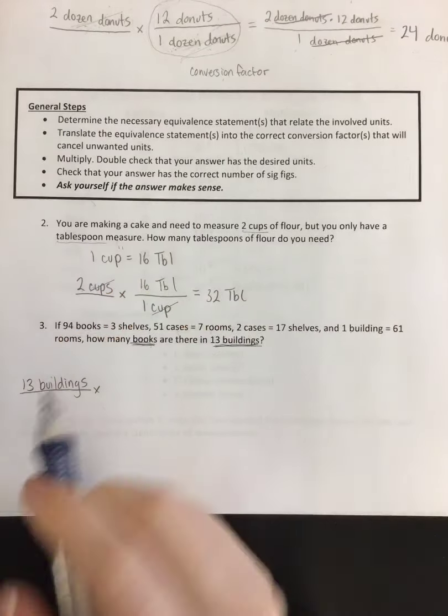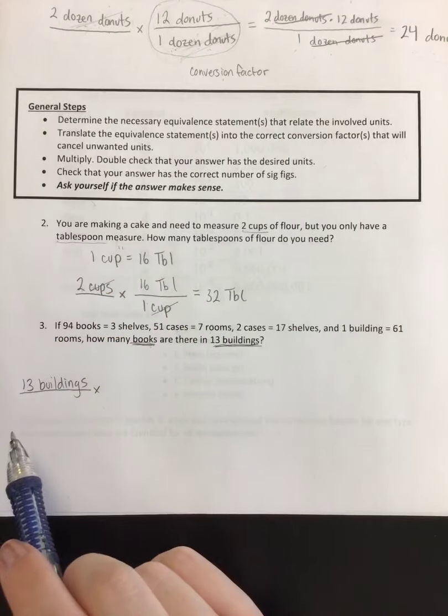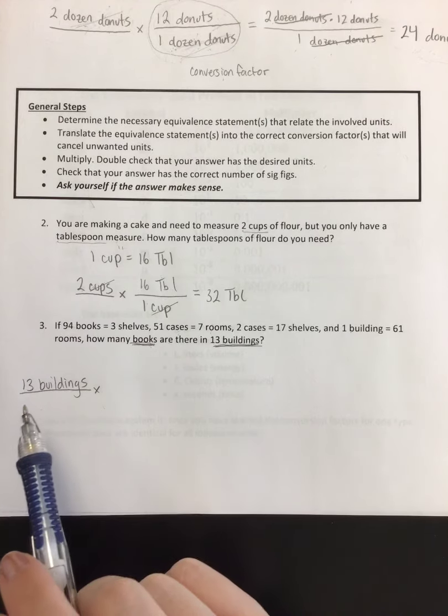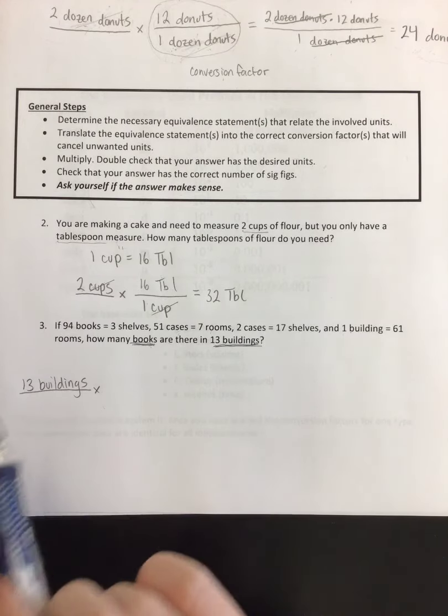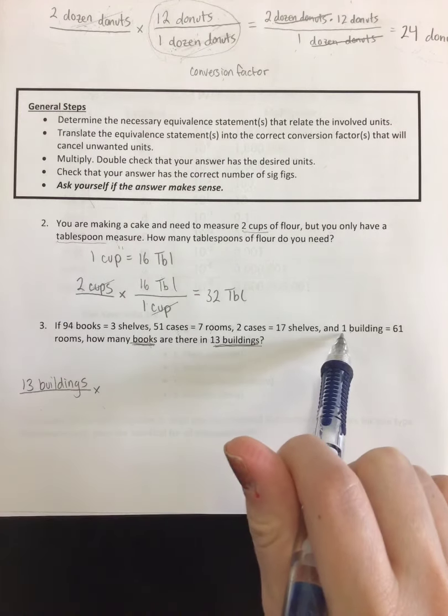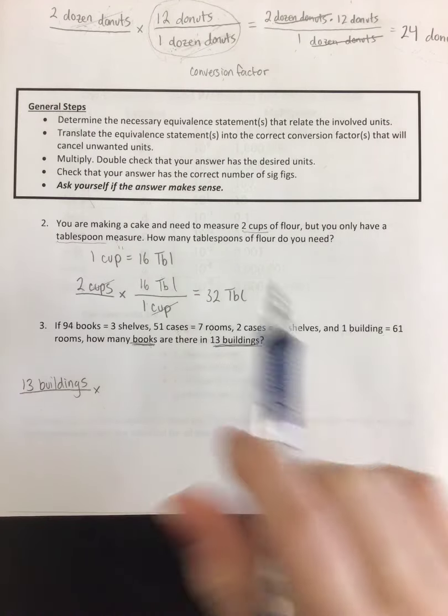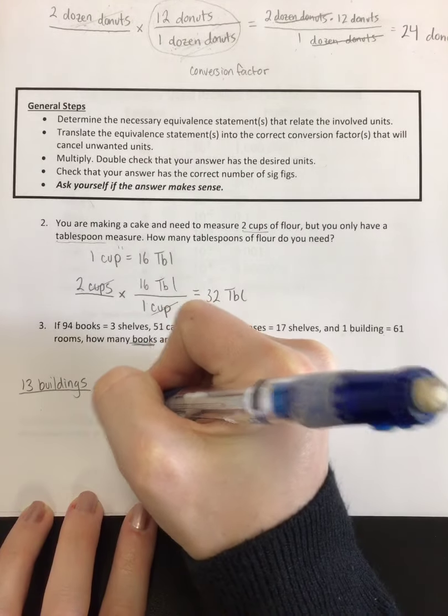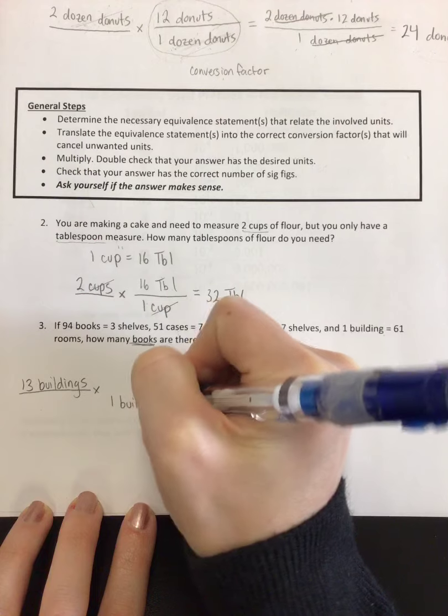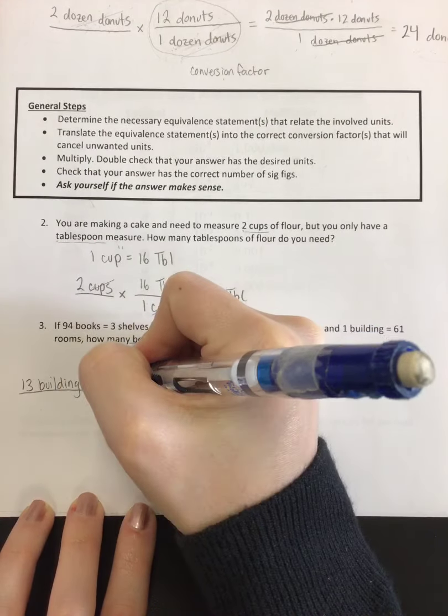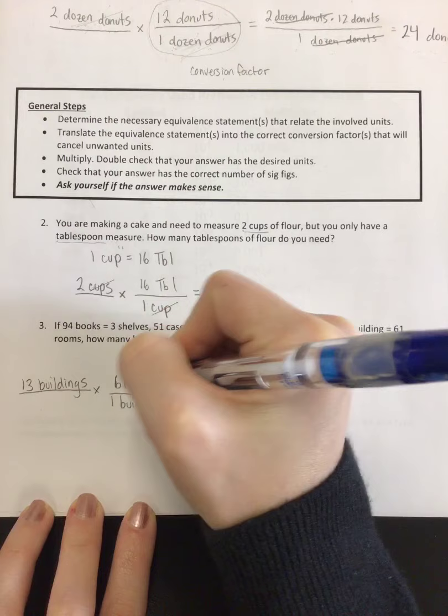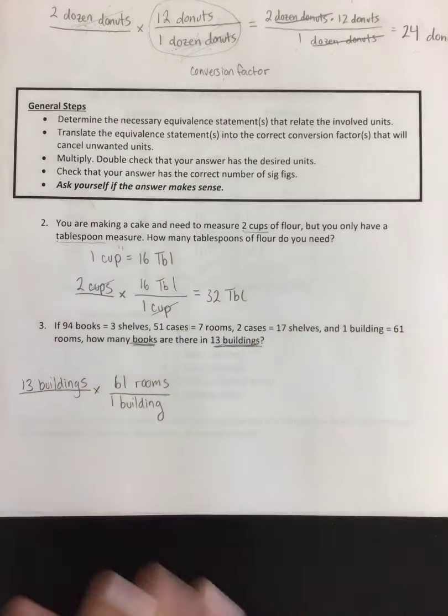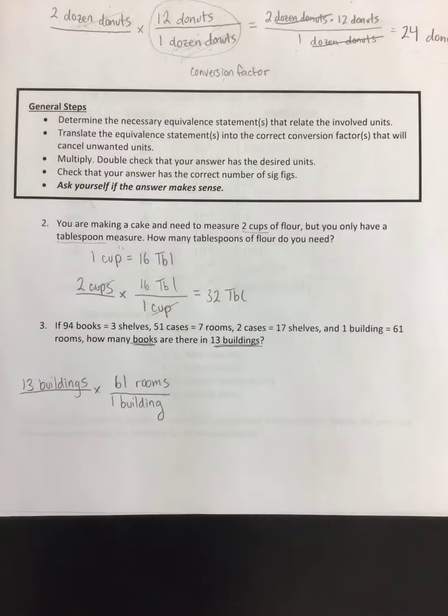Sometimes you just need to start with what you're given and see where you can go. If I start with 13 buildings, where can I go? What do I know that can help me get to a different unit? Because buildings, either way, is not going to work for me. Well, we know that one building equals 61 rooms. So if I want buildings to cancel with buildings, I need to put that on the bottom. So one building equals 61 rooms. Cool.